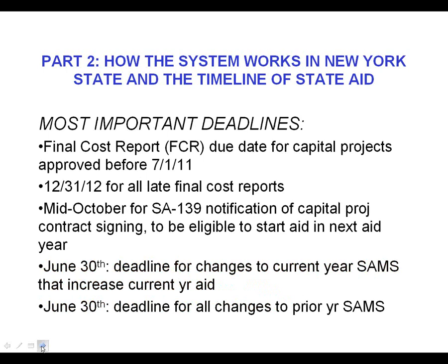Here are what seemed like the most critical deadlines. In particular, the final cost reports for capital projects that were approved before July 1, 2011 — there's a special amnesty enacted last year. If you've got a late final cost report and you get it in by December 31st of this year, you will not lose all the building aid on that project. You will only lose the building aid for the number of years that the report was delinquent. But once that 12-31 amnesty ends, for projects approved before 7-1-11, if you submit a late final cost report, you lose all the building aid on the project. And that's not pretty.